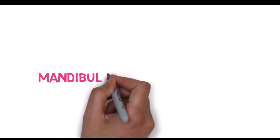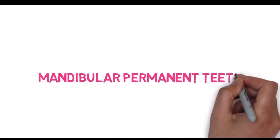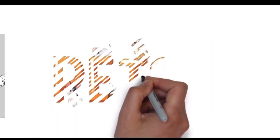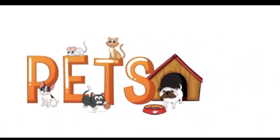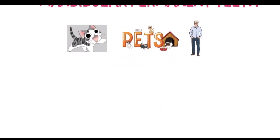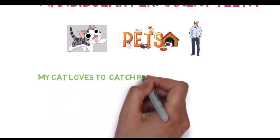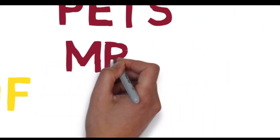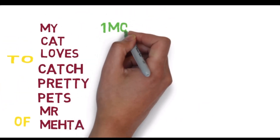Now we will see the eruption of mandibular permanent teeth. The story is of a cat who loves to catch pretty pets of Mr. Mehta. So we have a cat, pretty pets, and Mr. Mehta. Our mnemonic is: My Cat Loves To Catch Pretty Pets Of Mr. Mehta. I will write it in vertical format as before, with the first letter of each word denoting the tooth.